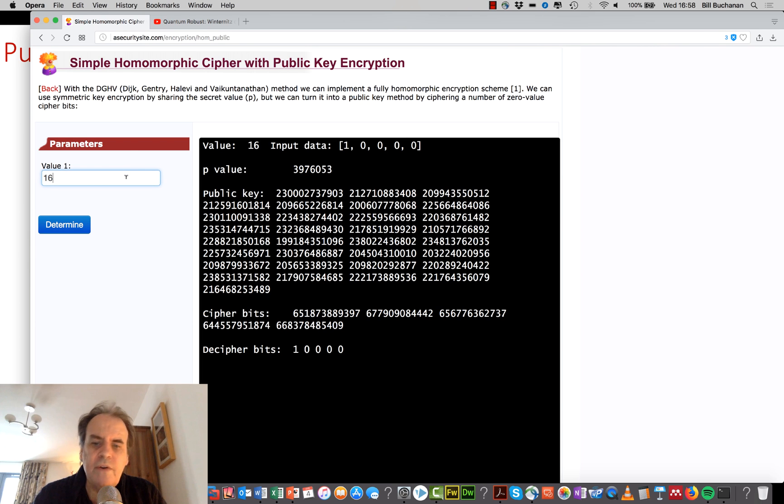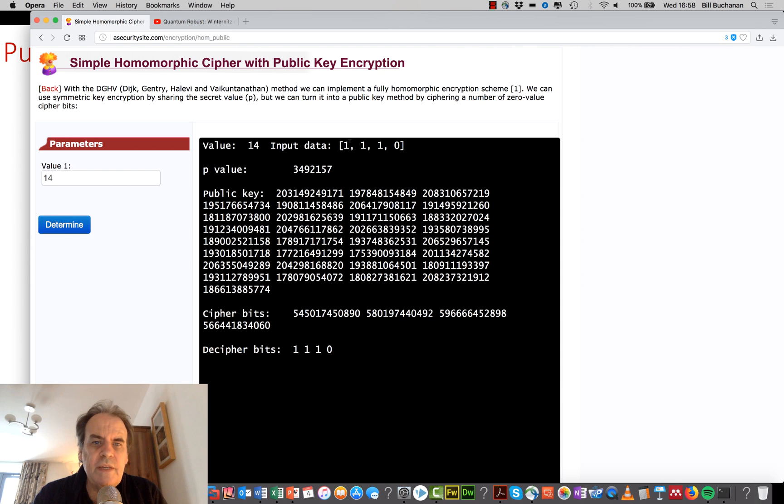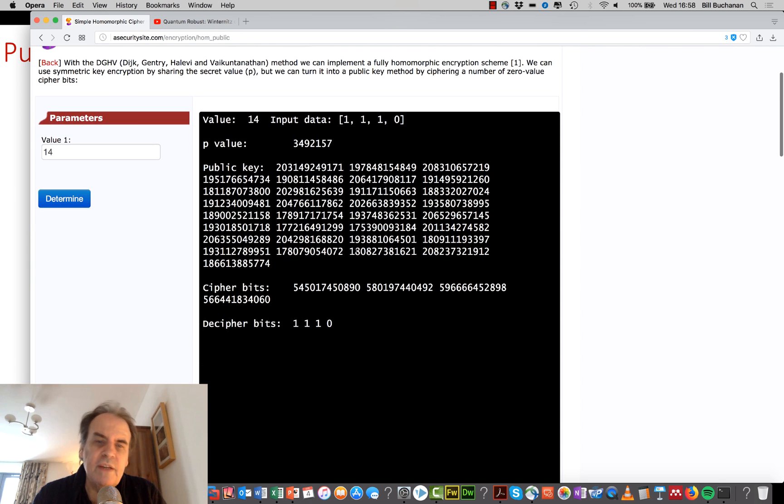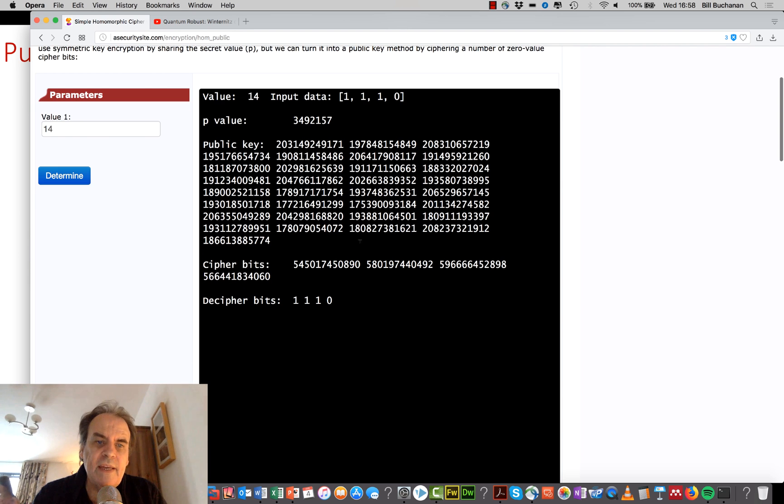So here's a value. So we'll take a value of 14. So a value of 14 is this in binary. We take our p-value, and then we cipher 32 values. We create 32 values for our public key.